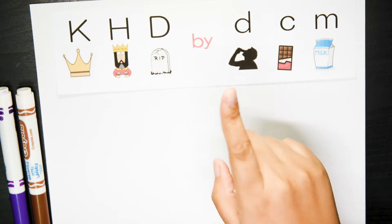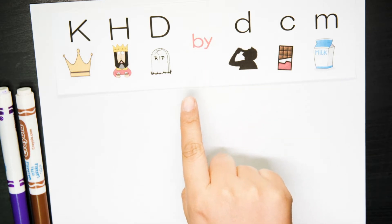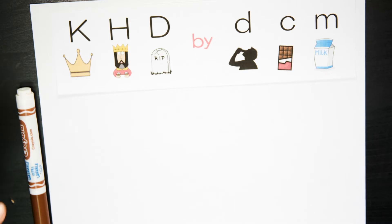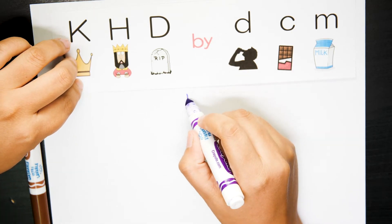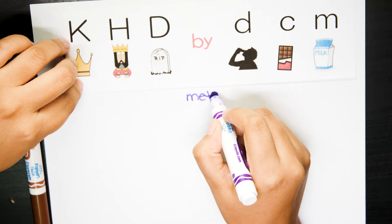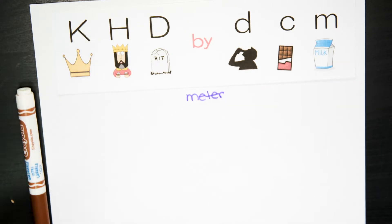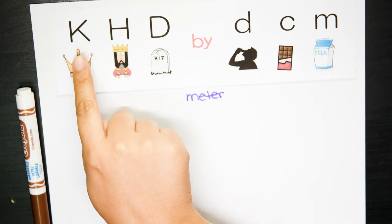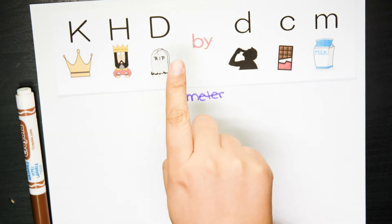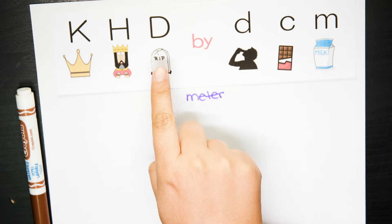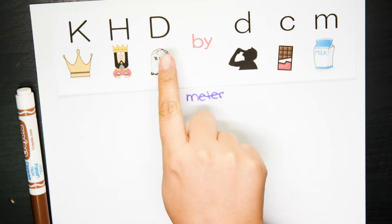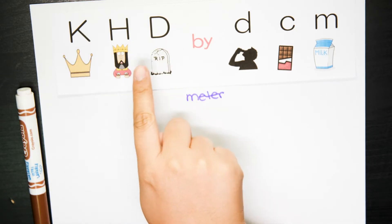As you remember, the base will be meter — that will be our base. Remember that the K is for kilo, the H is for hecto, the D is for deca, and these three are the largest units. That's why they are capitalized.